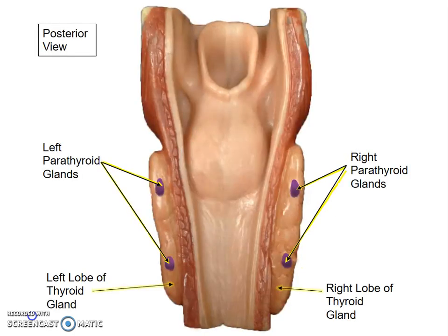Here's a posterior view of that. You can see the right and left lobes of the thyroid gland — these nice little wing structures. Also found on the lobes of the thyroid gland, you can see these purple-shaped structures. There are actually four of them, and they are pea-sized in reality. These glands are called parathyroid glands. You can see two right parathyroid glands on the right lobe and two left parathyroid glands on the left lobe of the thyroid gland.